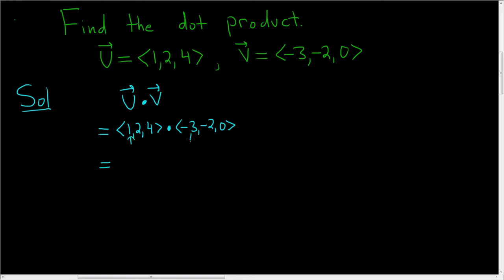So 1 times negative 3, and then you put a plus sign, and then 2 times negative 2, and then you put a plus sign, and then 4 times 0.